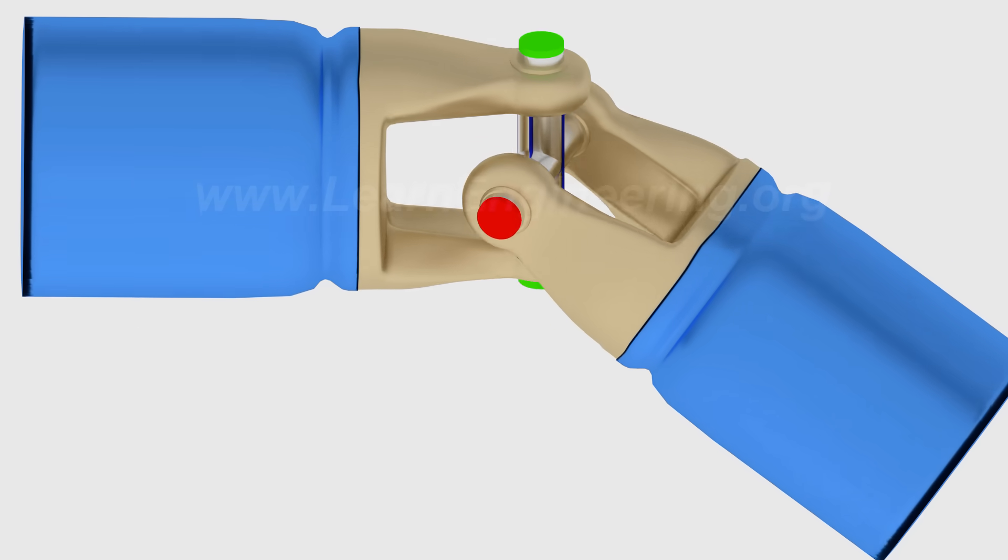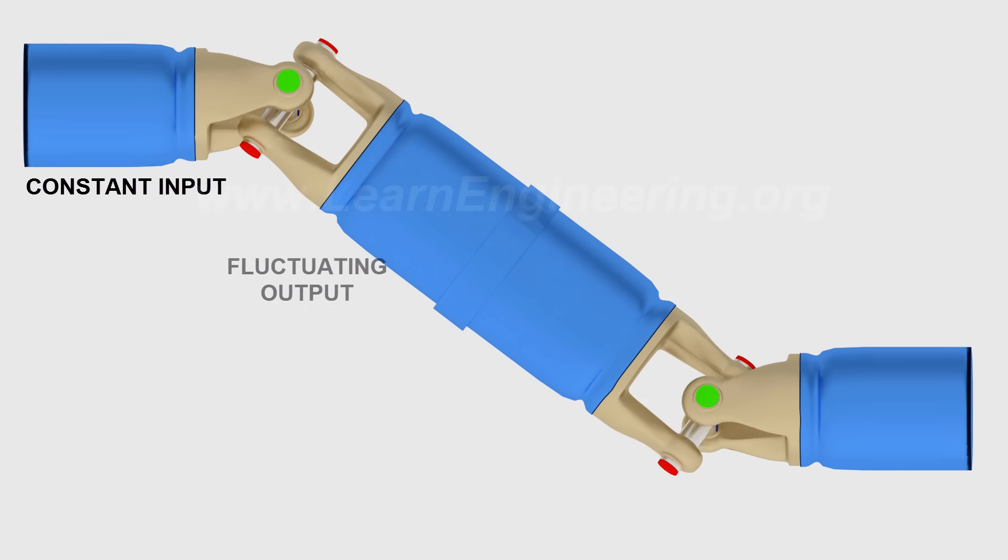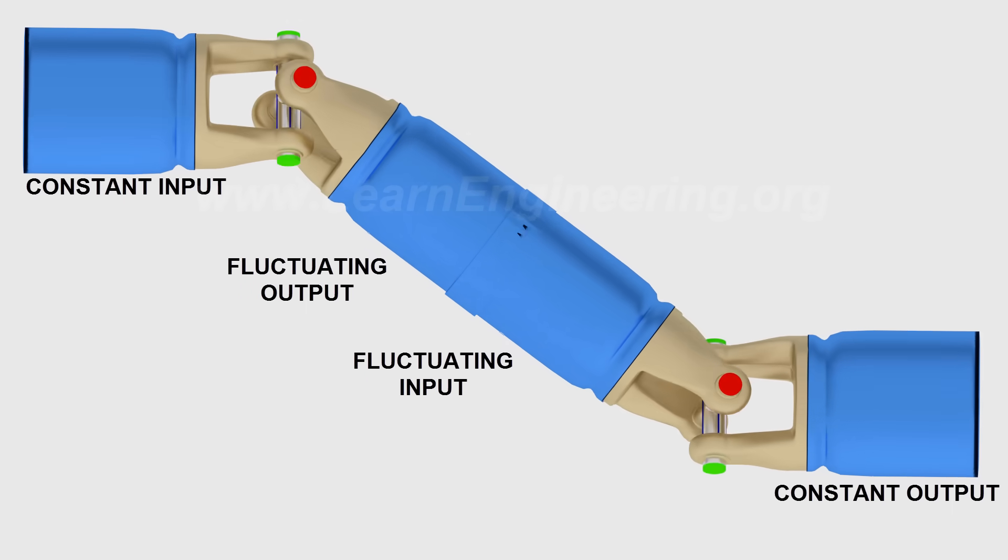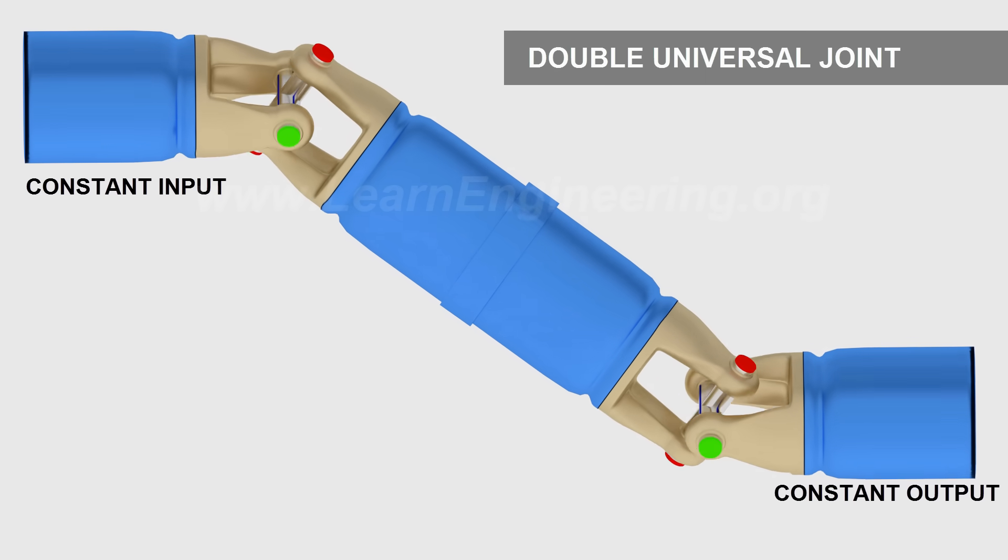But you can make it a constant velocity joint by incorporating one more joint, as shown. If a constant velocity input gives fluctuating output, a fluctuating input will give a constant velocity output. Thus, the double universal joint acts as a constant velocity joint.